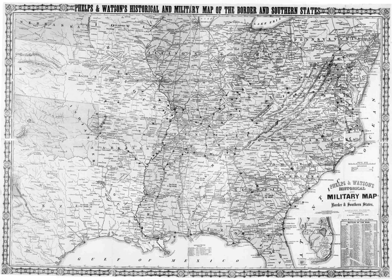In the Indian Territory (present-day Oklahoma), most Indian tribes owned black slaves and sided with the Confederacy, which had promised them an Indian state if victorious in the war. But some tribes and bands sided with the Union. A bloody civil war resulted in the territory, with severe hardships for all residents.